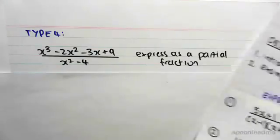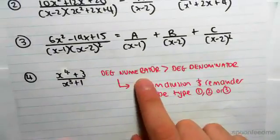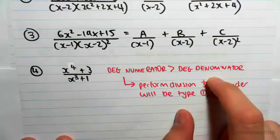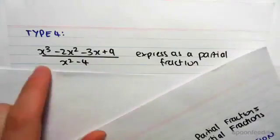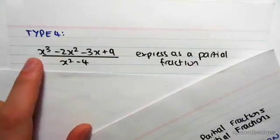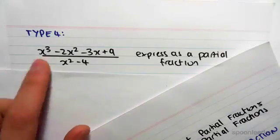Now the reason this is Type 4 is that Type 4 is when the degree of the numerator is greater than the degree of the denominator. So we have a cubic on a quadratic, so in this case what we're going to have to do is divide through.